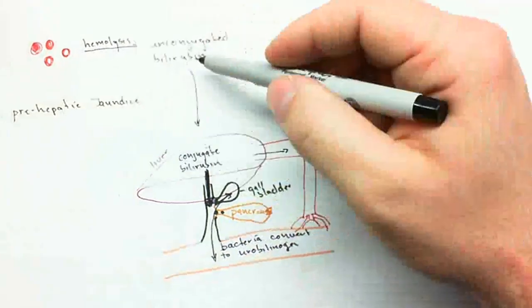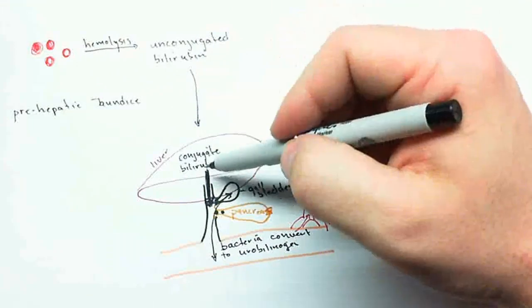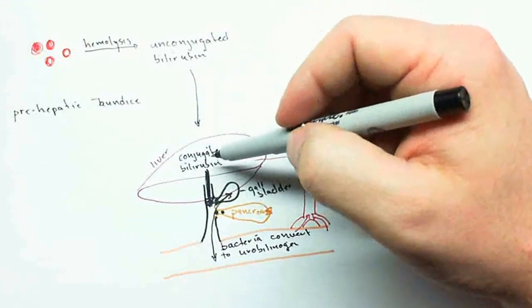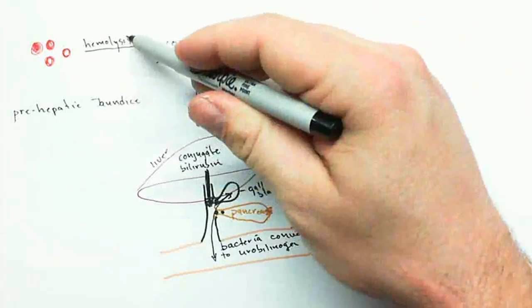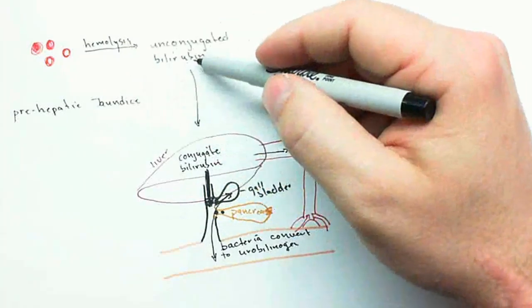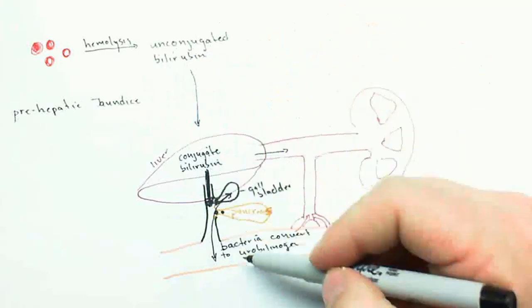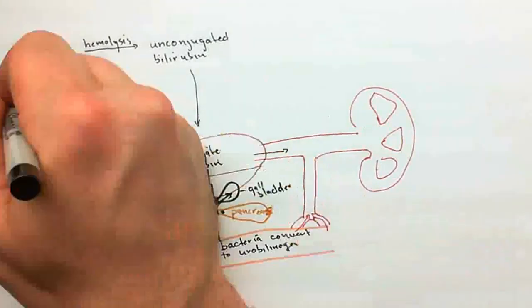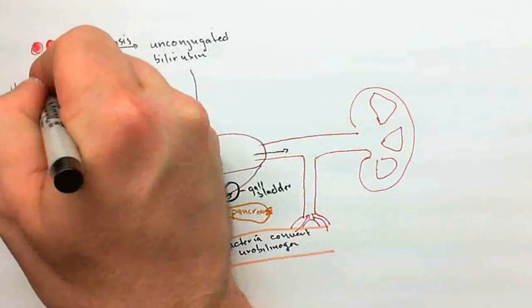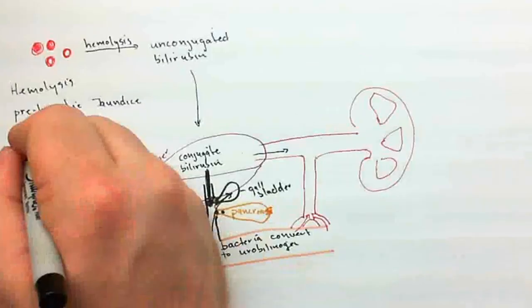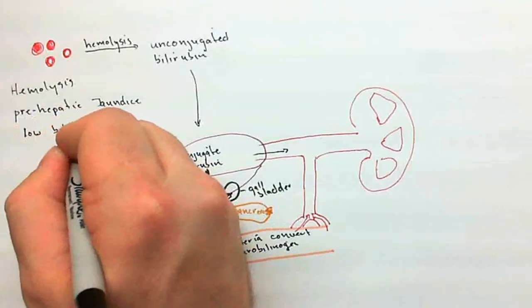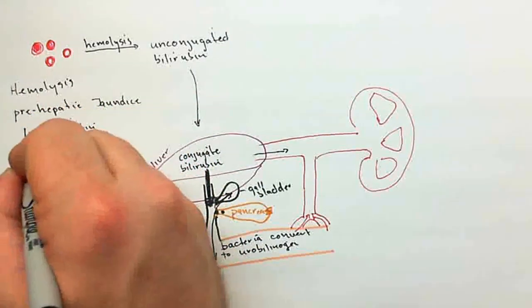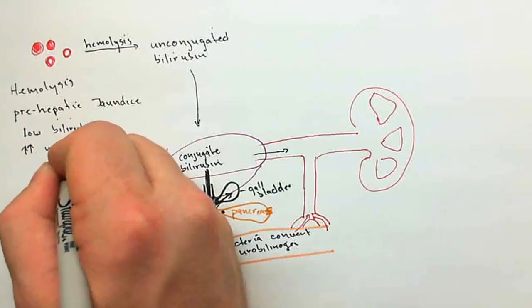In this case, if there's extra hemolysis, then there's going to be extra bilirubin. But one thing about the liver is it can conjugate basically all the bilirubin that it receives, so it has plenty of capacity here. So even though excess hemolysis will cause excess bilirubin, all of that bilirubin will be conjugated, passed down into the gut, and converted to urobilinogen. So in the case of hemolysis, we actually expect a low bilirubin, and that's normal. But you've got extra urobilinogen, and so you're going to see high urobilinogen.